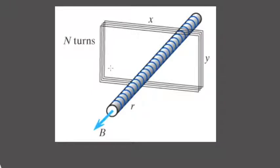Independent of the solenoid, we also have these rectangular loops of wire. Suppose there are n turns of this wire. What we expect to have happen is that the magnetic field from the solenoid is going to induce a current in this rectangular loop of wire. What we'd like to do is determine the direction of that induced current and the magnitude of the current in that loop.